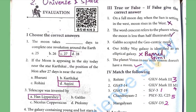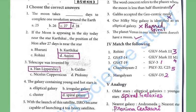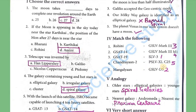The planet Venus in our solar system does not have a moon — true. Match the following: Rohini — SLV-3; GSAT-14 — GSLV-D5; GSAT-19 — GSLV-Mk3; Chandrayaan-2 — GSLV-Mk3-M1; Chandrayaan-3 — GSLV-Mk3-M1; Mangalyaan — PSLV-XL C-25.